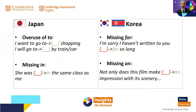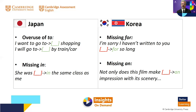We can compare specific examples from Japanese learners versus Korean learners. There are errors that Japanese learners make rather than Korean learners — for example, the overuse of the preposition 'to': 'I want to go to shopping' or 'I will go to by car' are mistakes that Korean learners rarely make. Similarly, a missing 'in', as in 'she was in the same class as me', is a mistake Koreans tend not to make.